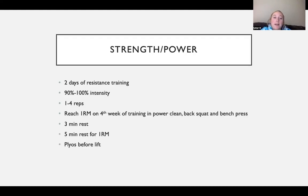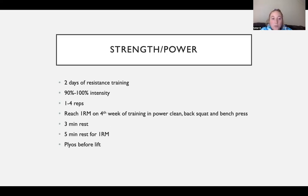The last phase is the strength and power phase, also featuring two days of resistance training at 90 to 100% intensity with 1 to 4 reps. The fourth week of training reaches a one-rep max on the power clean, back squat, and bench press. Rest intervals are 3 to 5 minutes between sets, with 5 minutes when reaching the one-rep max. Plyometrics, aerobic training, and agility training all continue during this phase.